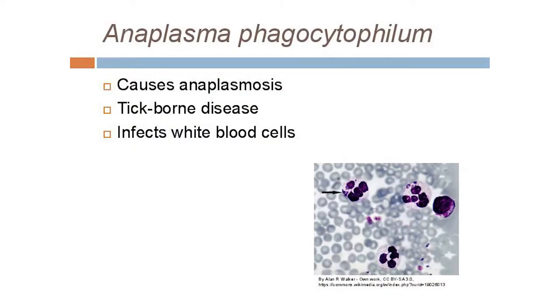The last pathogen I'd like to talk about is interesting for two reasons. It is transmitted by Dermocenter — this is our Dermocenter variablis-specific pathogen — and instead of infecting red blood cells as we'd see in Babesia, it actually infects white blood cells. It can be described as causing the same symptoms as Rocky Mountain Spotted Fever but without that characteristic rash.